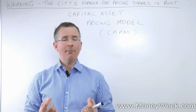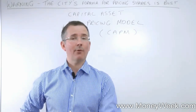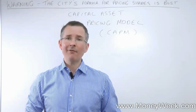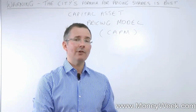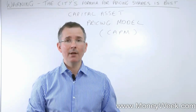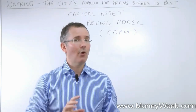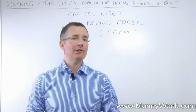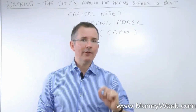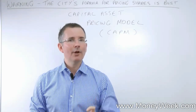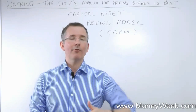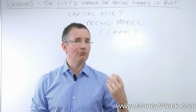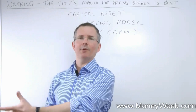Underlying this model are two key questions every investor should be able to answer. Number one: what is the minimum return I could get for investing somewhere completely safe? And how much more do I want for investing in shares — double, treble, ten times? The CAPM model is the city's attempt to answer: what expected return do I want from the shares I'm about to buy? And what's the minimum I should expect for taking the risk of buying shares when I could buy safe government IOUs instead?